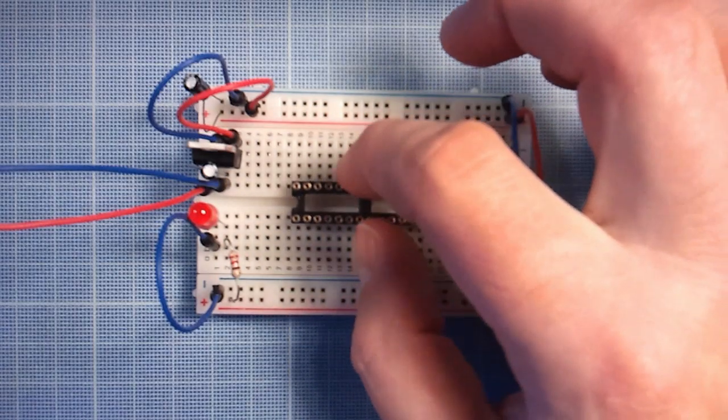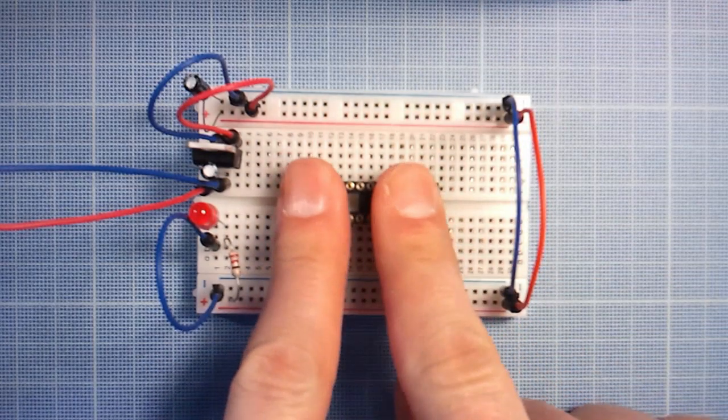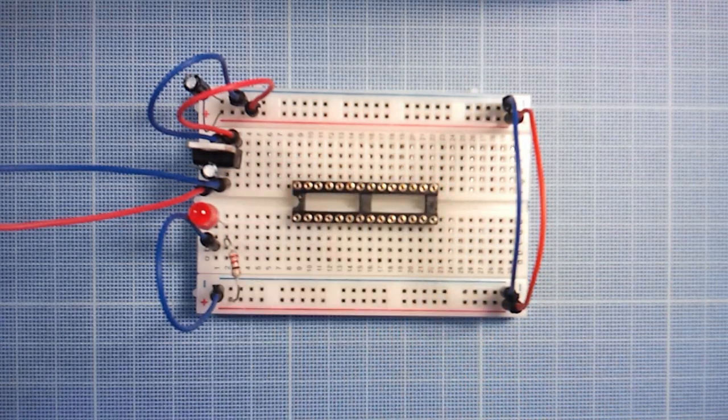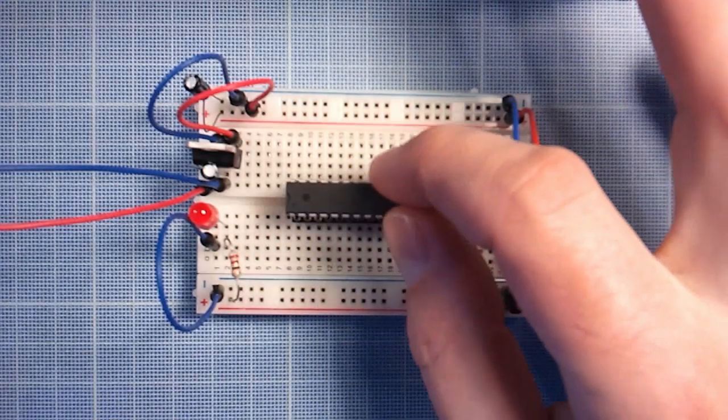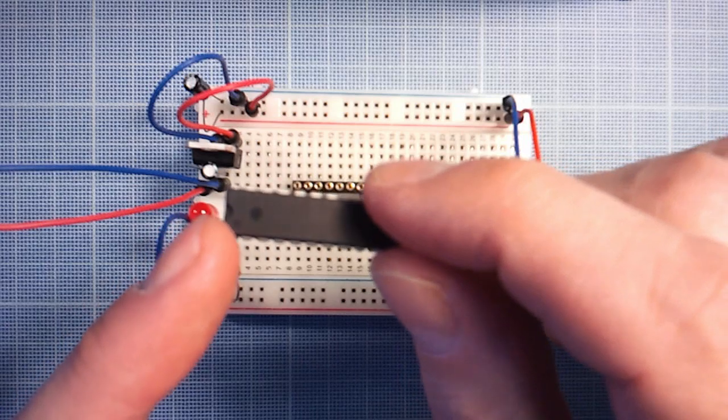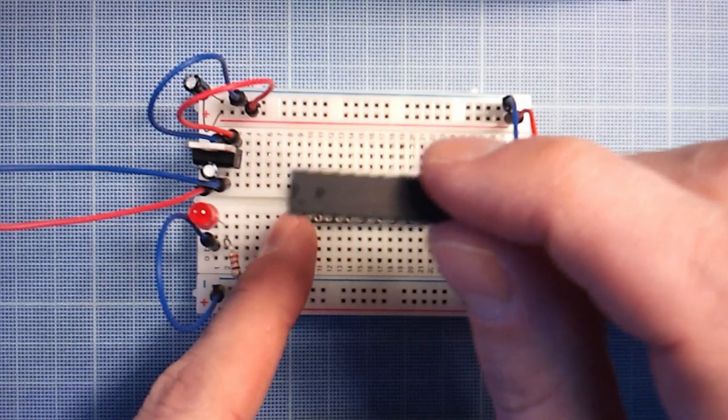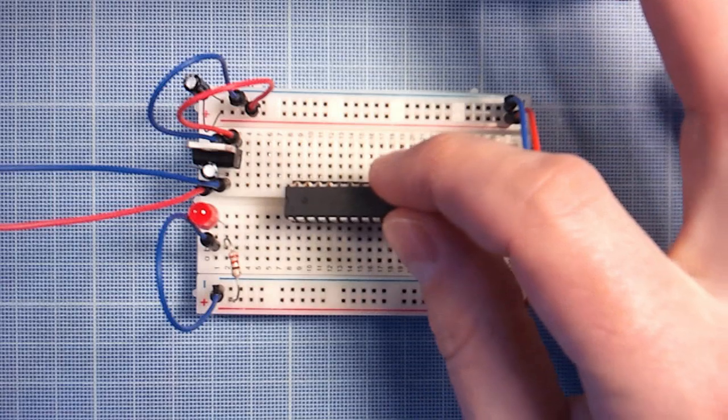Connect your socket to the middle of the breadboard. Plug your IC to the socket. Pay attention to the notch. There's one notch on the socket and one on the IC. They should be on the same side.